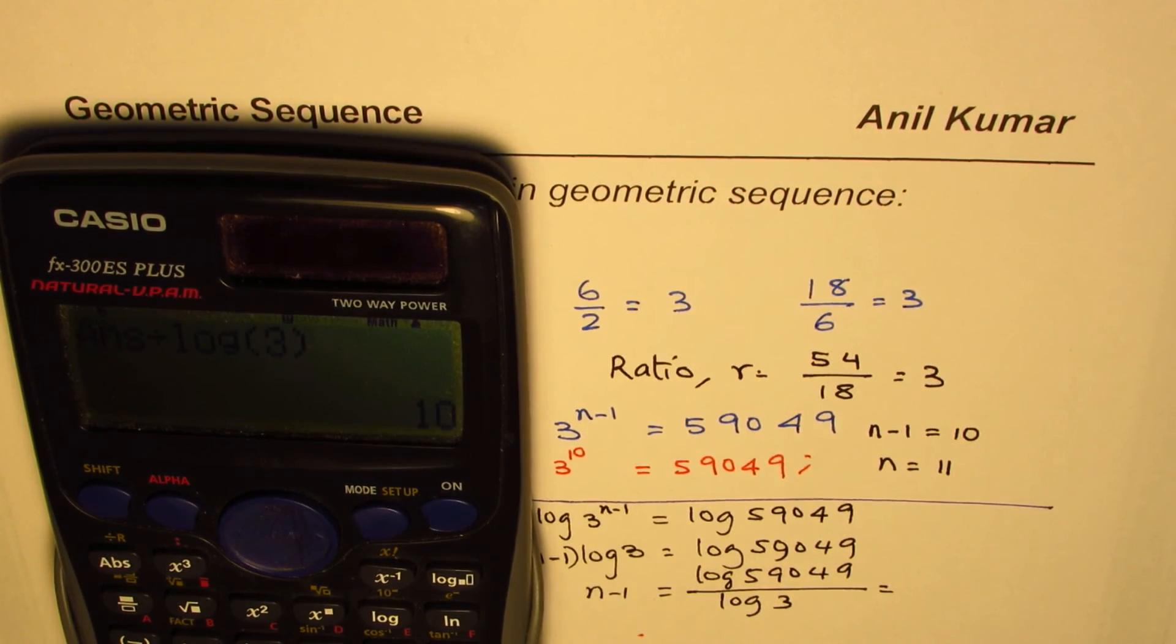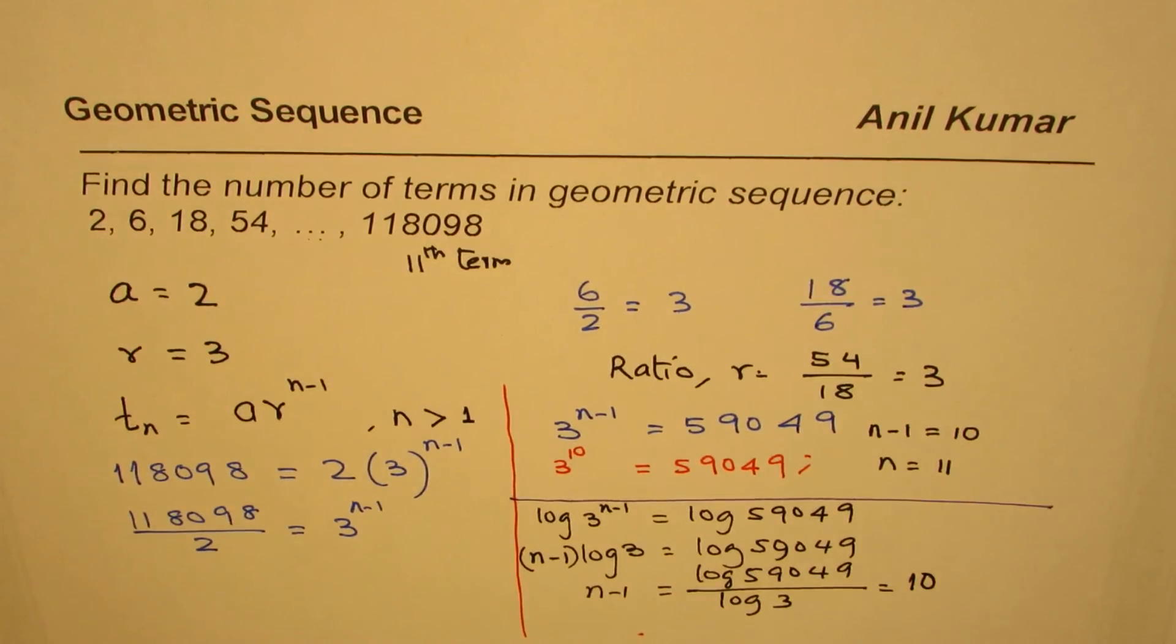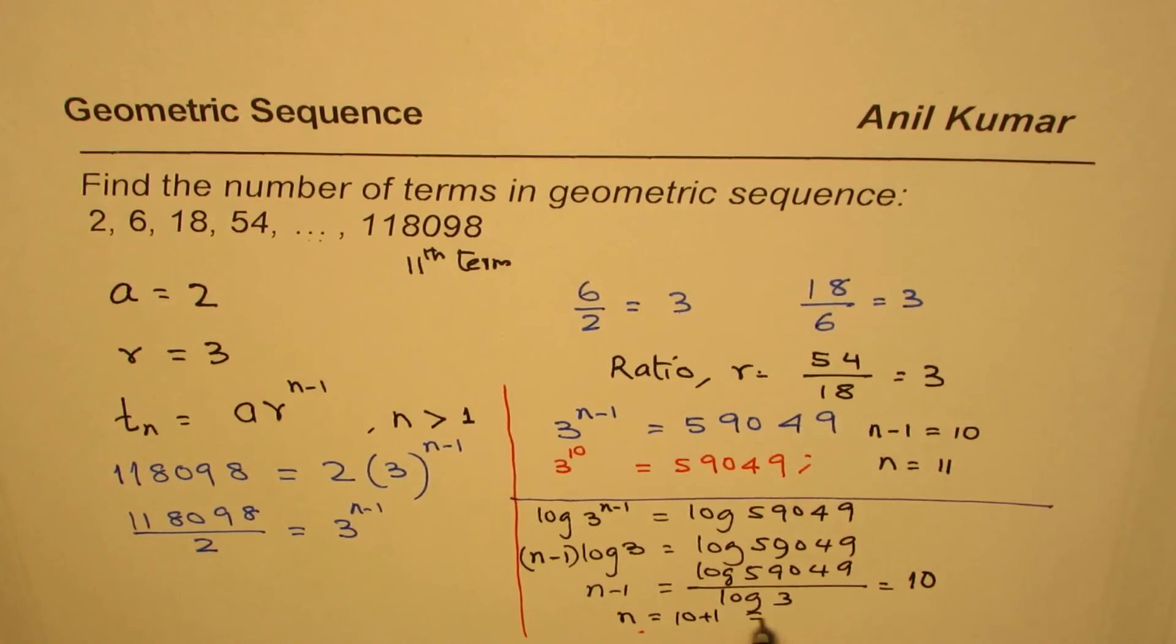Okay, is equal to, we get the number 10, you see that. So you could use the calculator log function to find this value. So we get n minus 1 equals to 10, n equals to 10 plus 1 which is 11, you get the same answer.